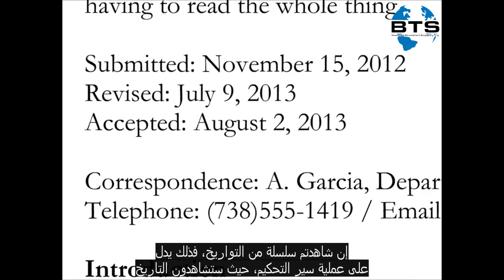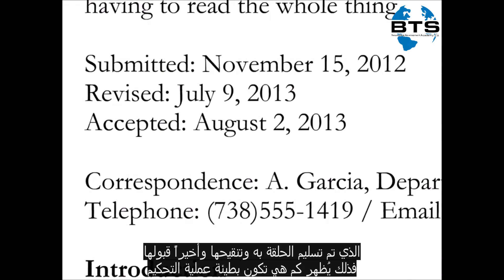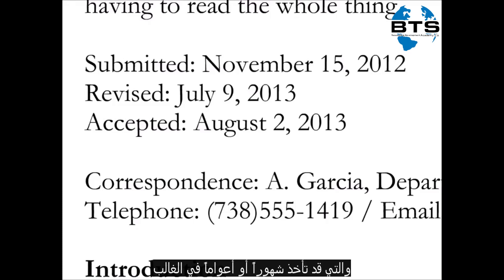If you see a series of dates, these correspond with the peer review process. This way you can see when the article was first submitted, revised, and finally accepted. This also shows you how slow the peer review process is — often taking months and sometimes years.